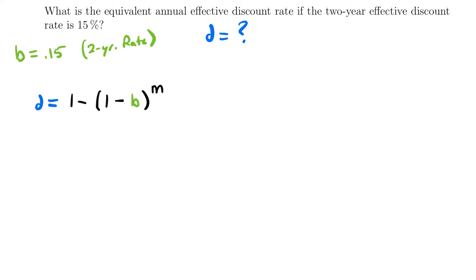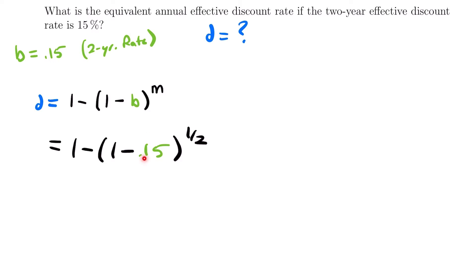We need to ask ourselves how many times per year is this rate B compounded. It's a two-year rate — it occurs once every two years. So in a one-year period, only half of the time that this interest rate occurs on has been taken up. Our M is going to be equal to 1/2. This rate takes place once every two years, and we are converting to a one-year rate, so only one-half of the period is occurring in one year.